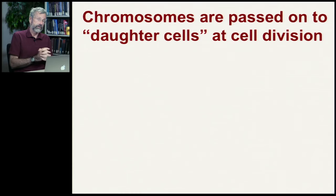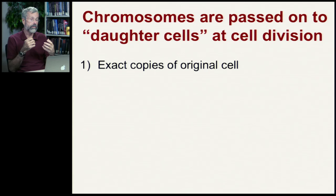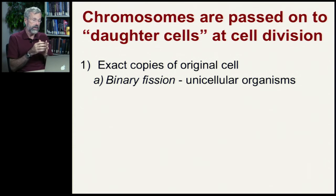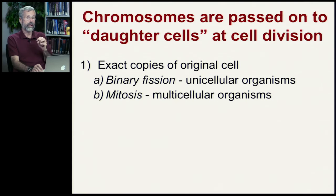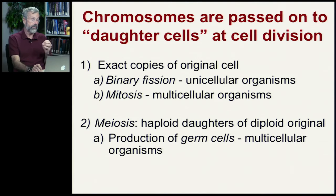So first we want to look at the chromosomes in these diploid cells — two copies of each chromosome — and how they're passed on to daughter cells at cell division. In bacteria, they undergo what's called binary fission, characteristic of many unicellular organisms. In multicellular organisms, replication of cells is called mitosis. The other process we'll look at today is meiosis — the generation of haploid daughter cells from a diploid original — which is what happens during the production of germ cells: our sperm and eggs.